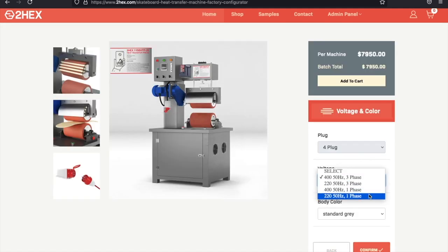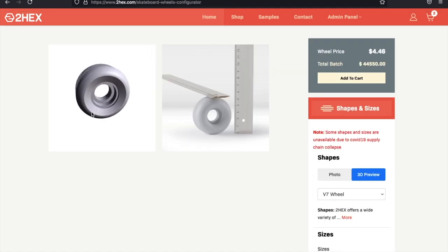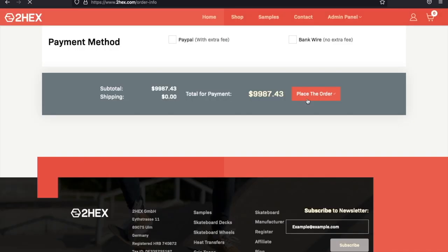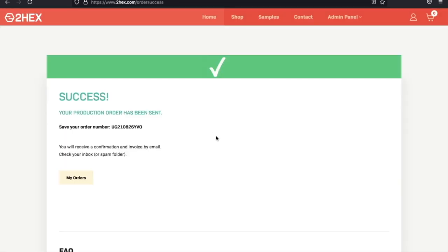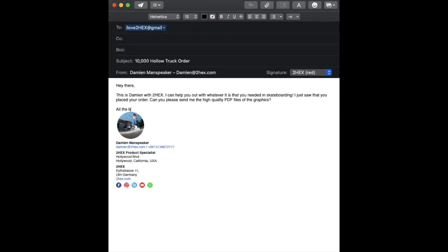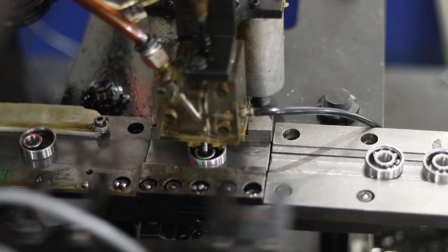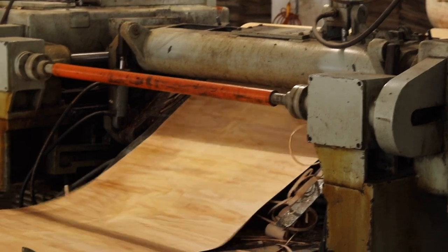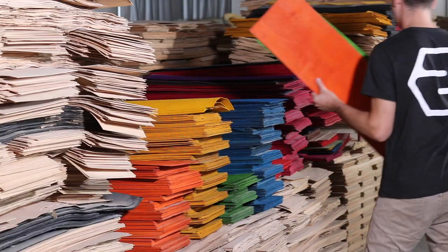We have a very simple online configurator for our machine and for all skateboard components. Once you submit your order you will be contacted by one of our sales managers to go through the next steps. Choose 2hex for top quality and leading supplies for anything you need in skateboarding.